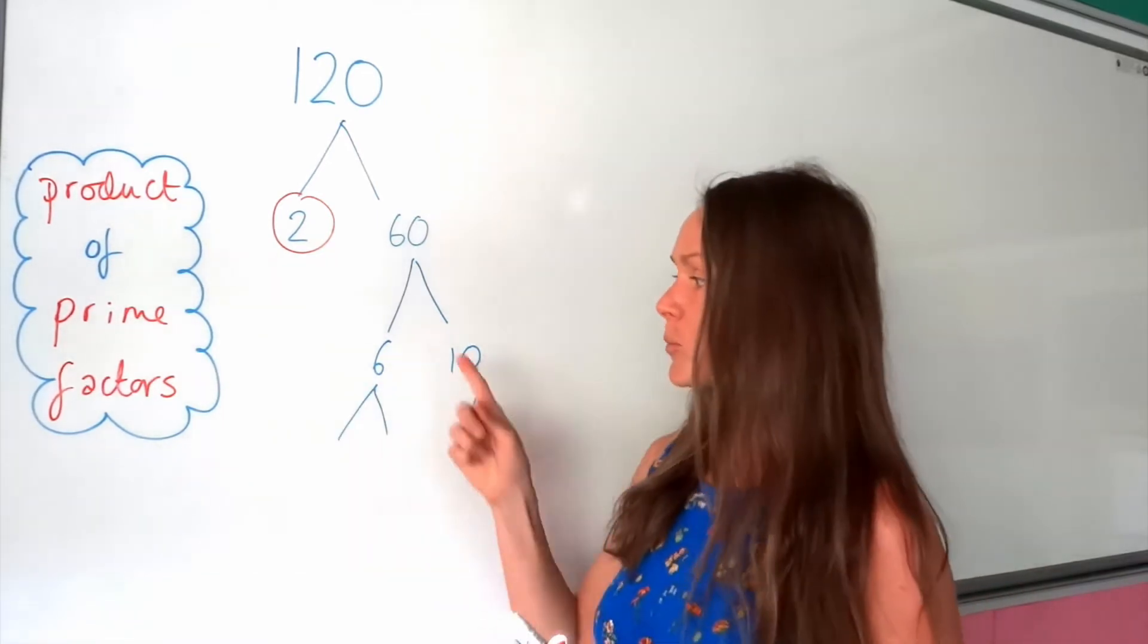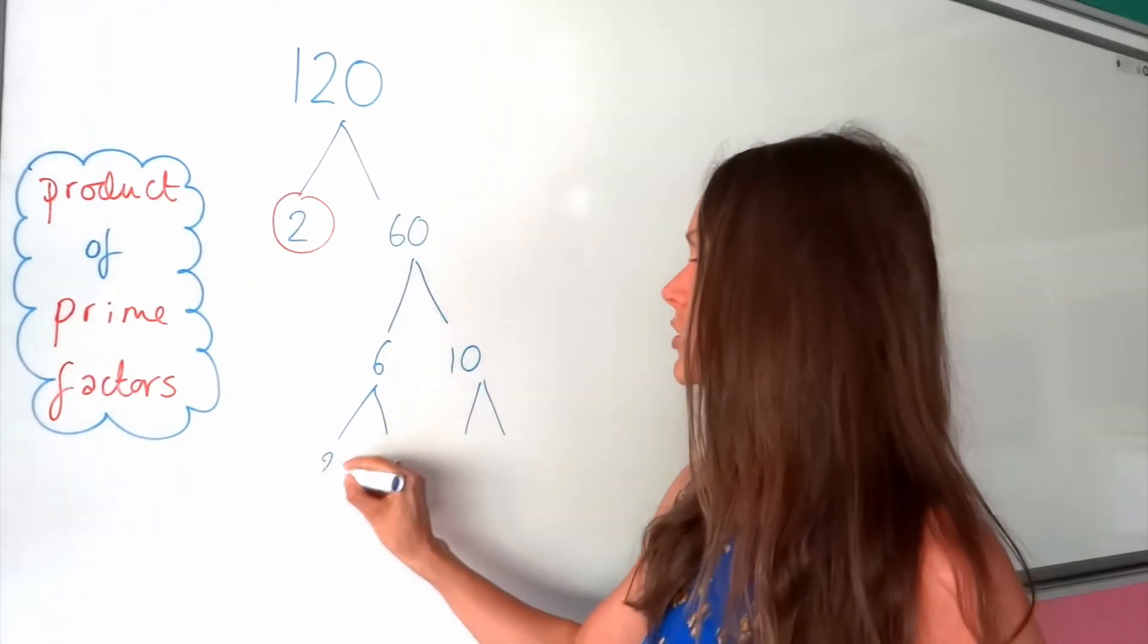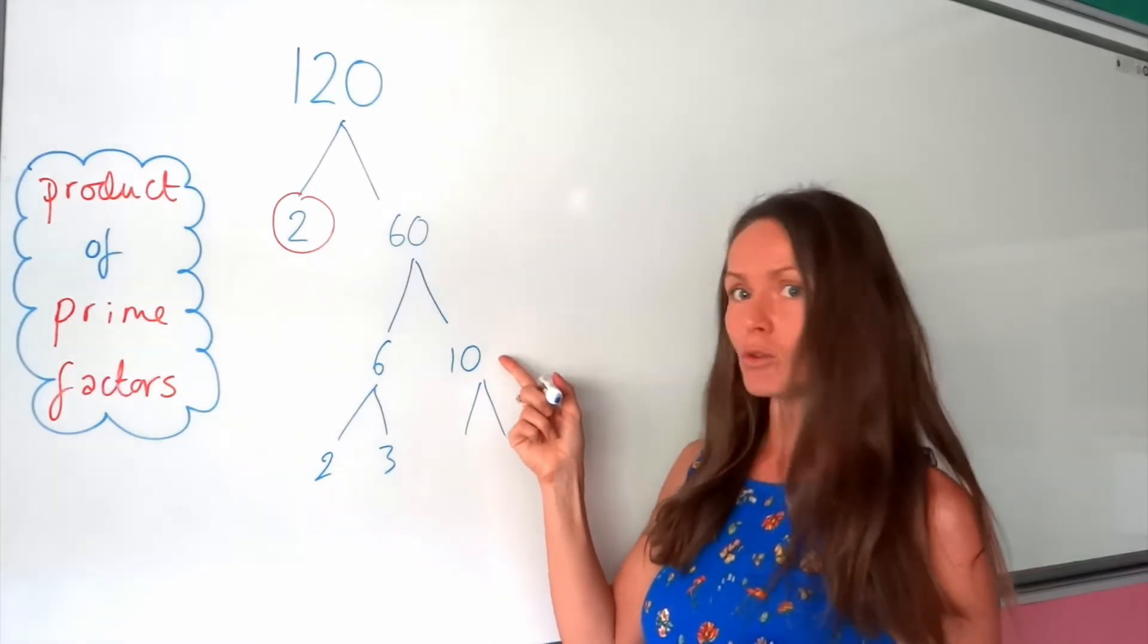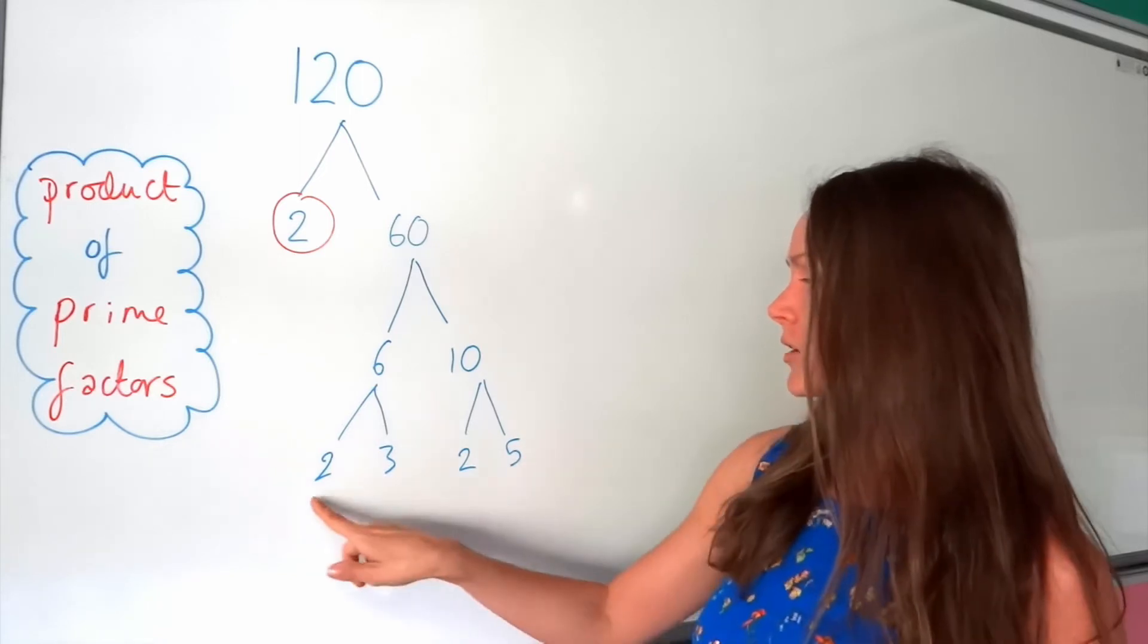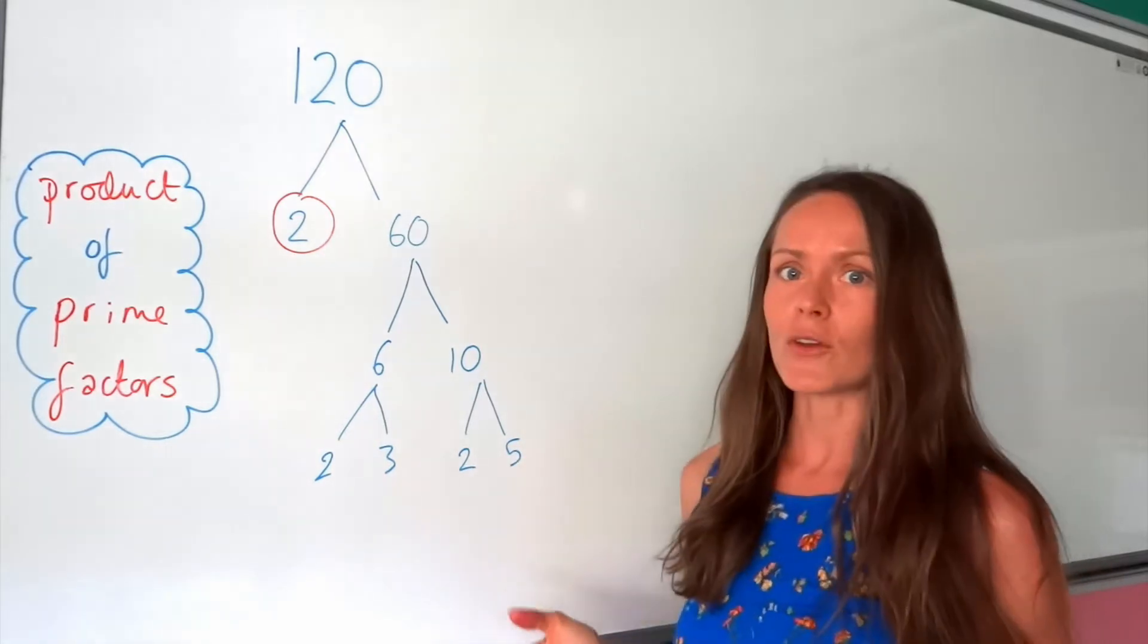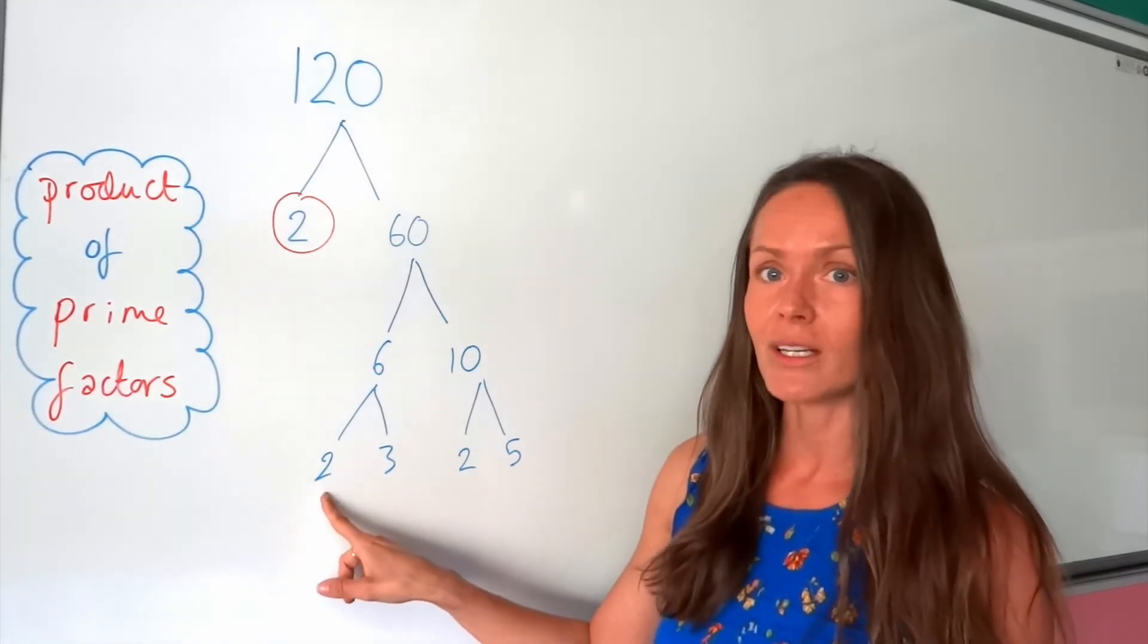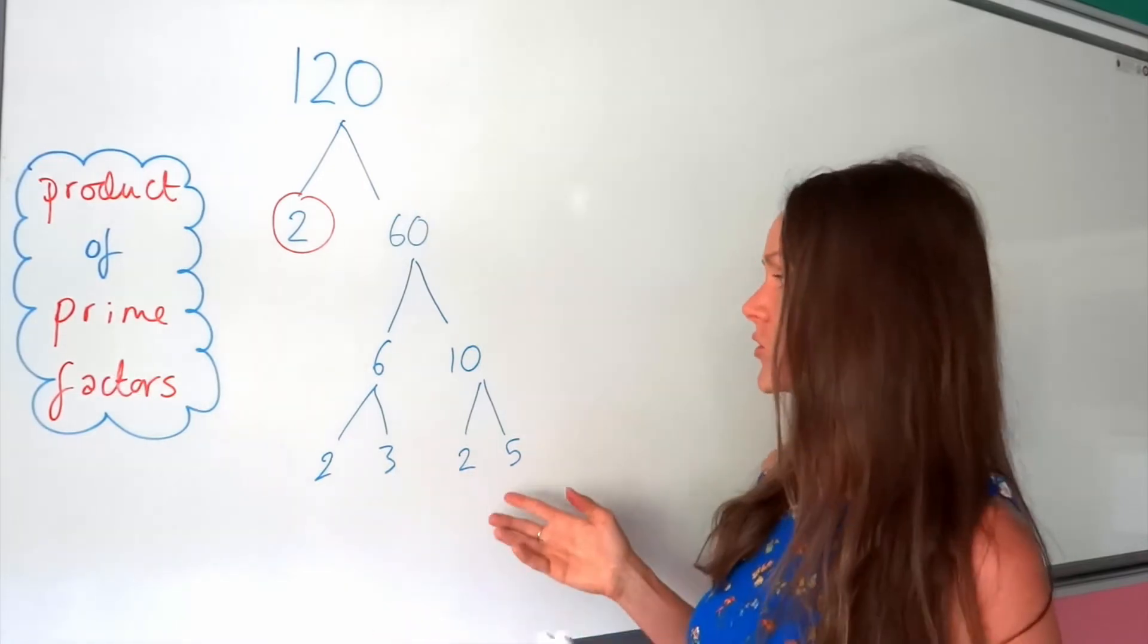So 2 numbers that multiply to give 6 without using the number 6, well, we can only choose 2 and 3. And 2 numbers that multiply to give 10, not including 10, 2 and 5. So when I look at all of these numbers, all of those numbers at the bottom happen to be prime, because 2 only has 2 factors, 1 in itself, 3 only has 2 factors, 1 in itself, and so on.